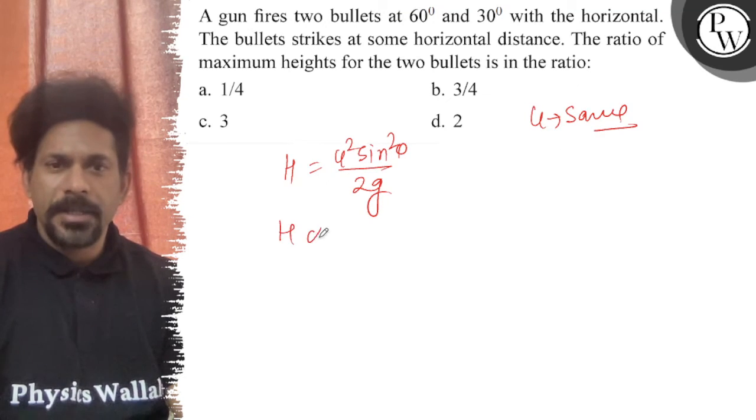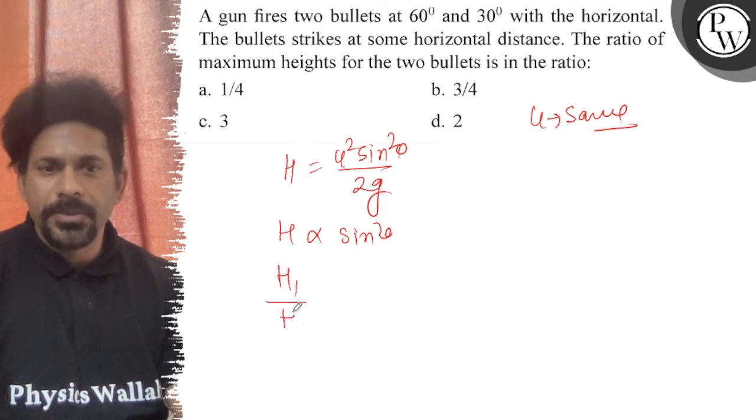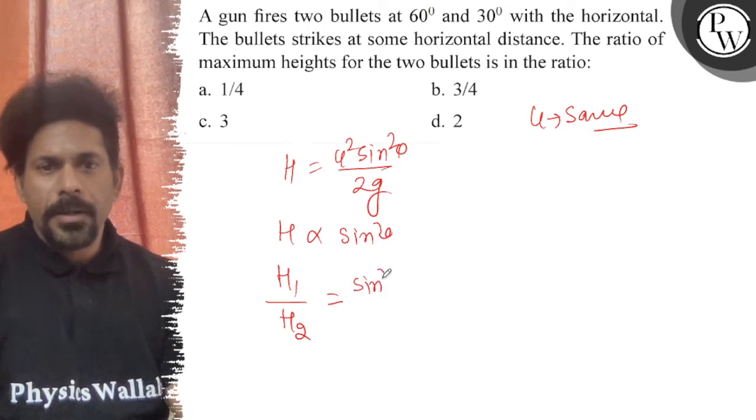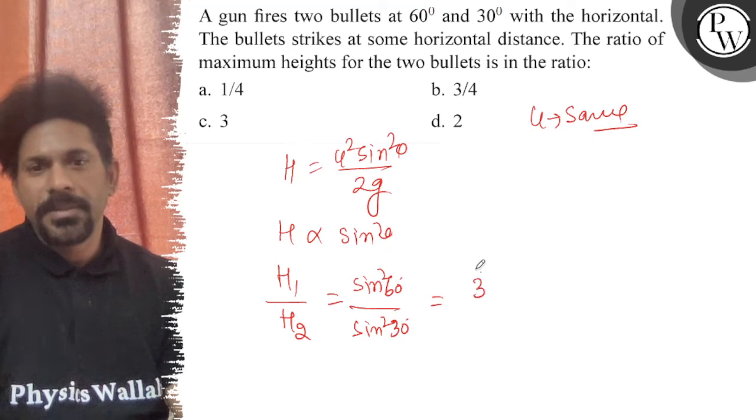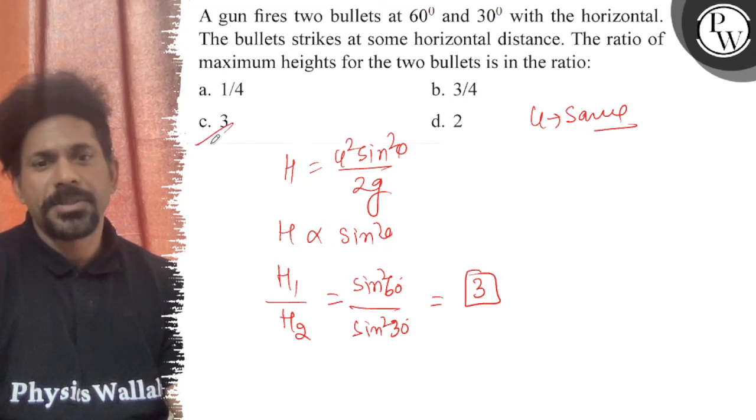So H is directly proportional to sin² θ. Therefore, H1 upon H2 is equal to sin² 60 upon sin² 30. So that is root 3 over 3, which is 3. The answer, so that means option C is correct.